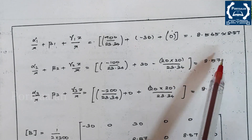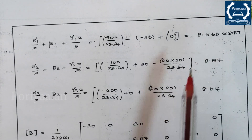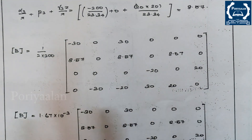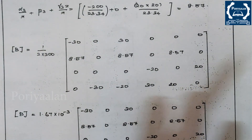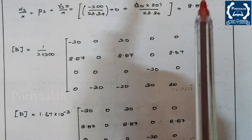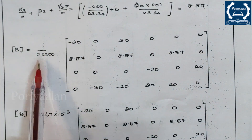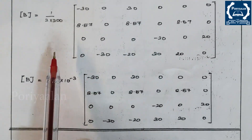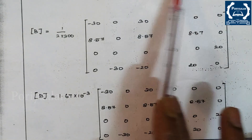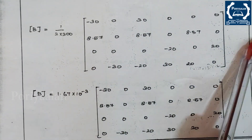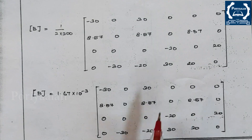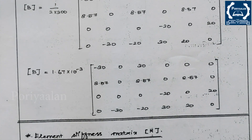Once the specific values for alpha, beta, and gamma are found, substitute them into the B matrix. The B matrix equals (1/2A) = 1/(2×300) times the matrix with all substituted values. Find the final numerical B matrix.